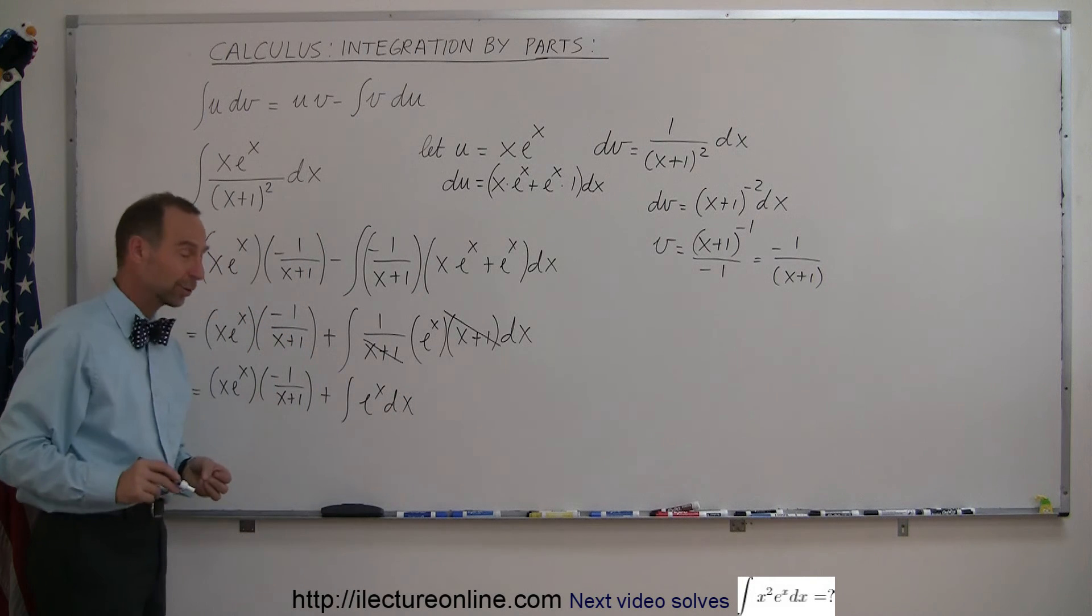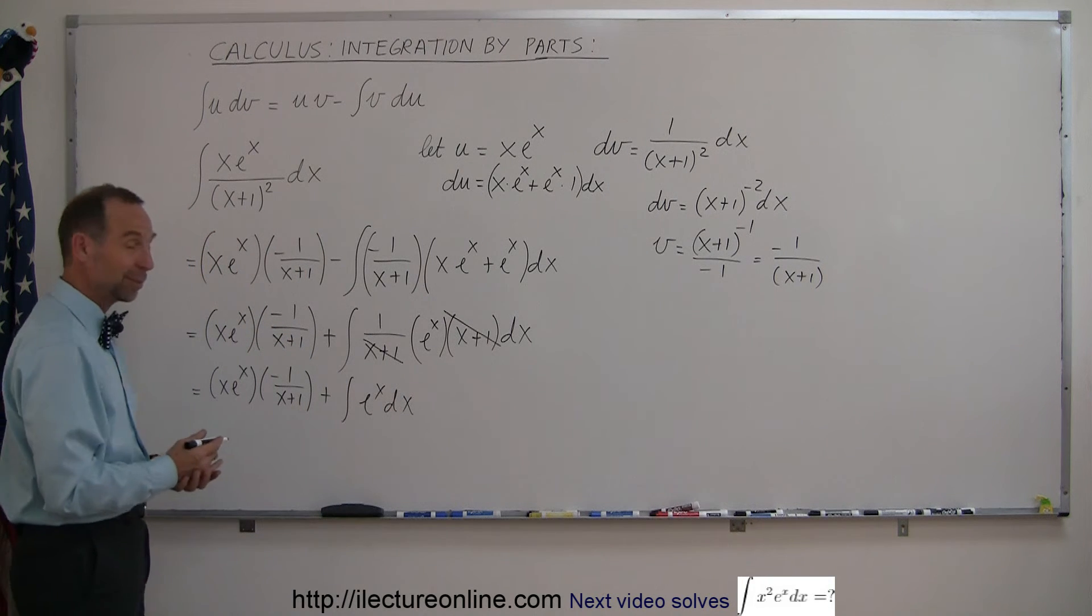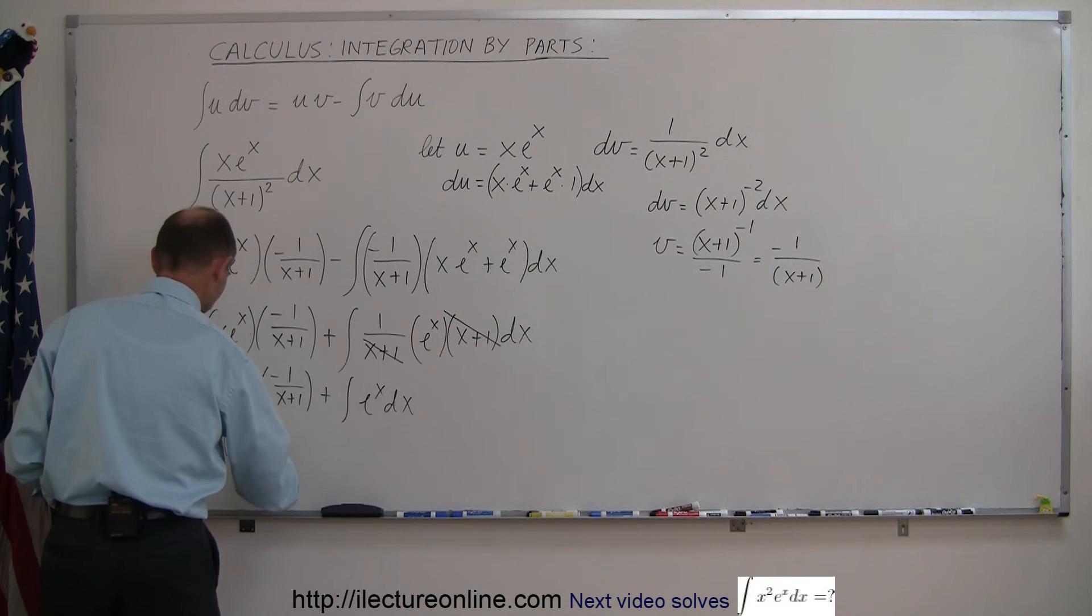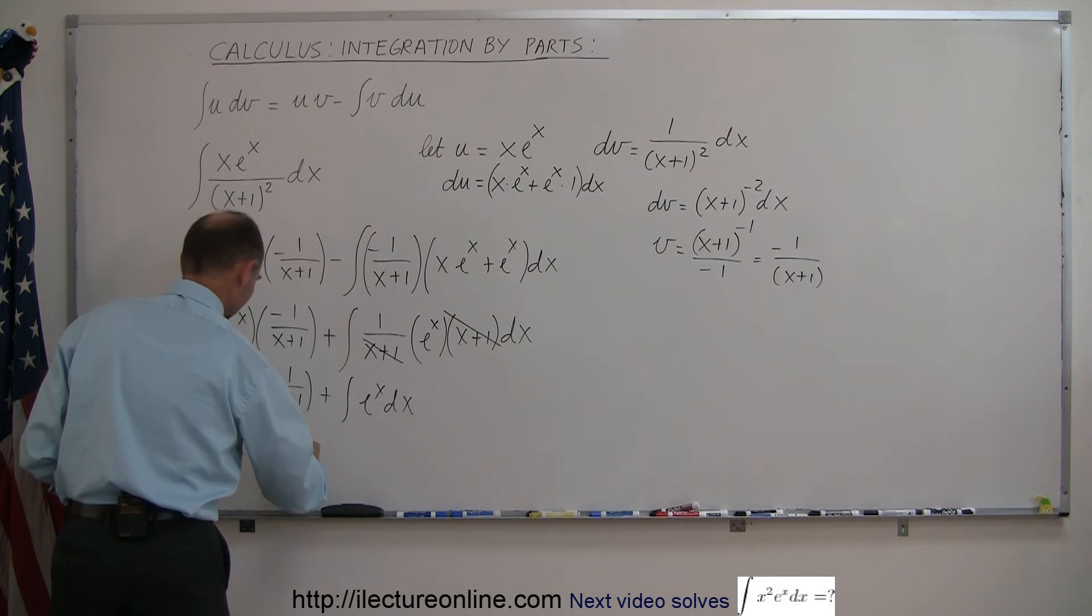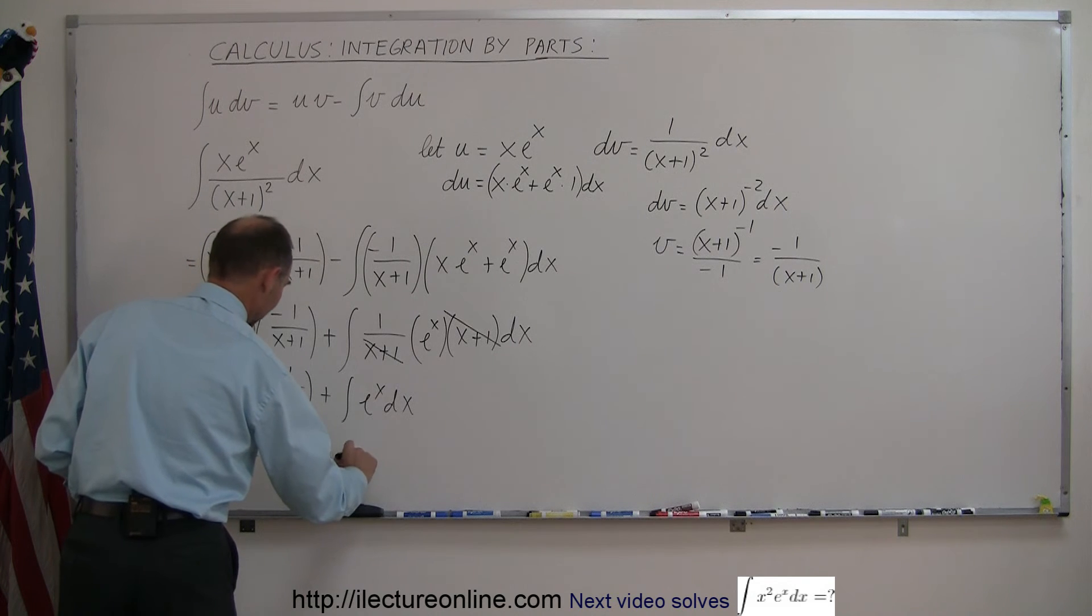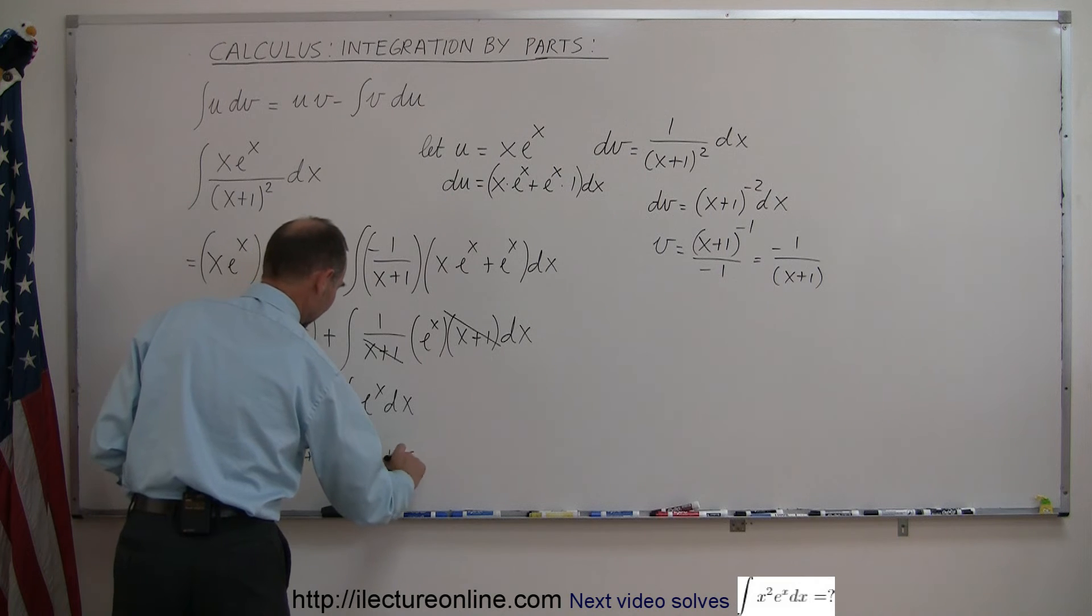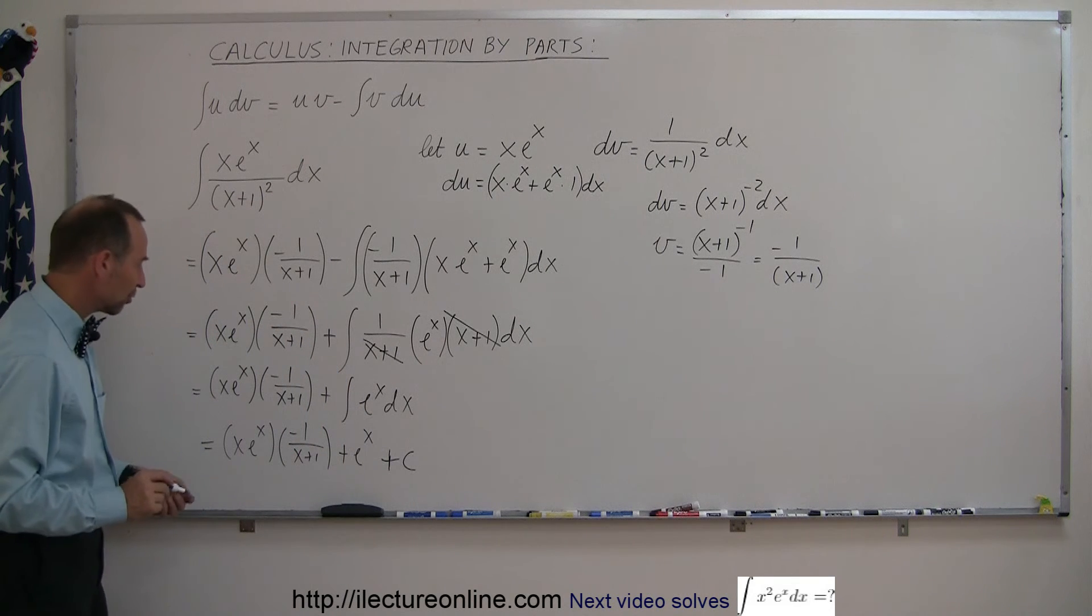And that's of course the easiest integral in the world to integrate because the integral of that simply is, you guessed it, e to the x, so this is equal to x e to the x times minus 1 over x plus 1 plus e to the x and then of course plus a constant of integration.